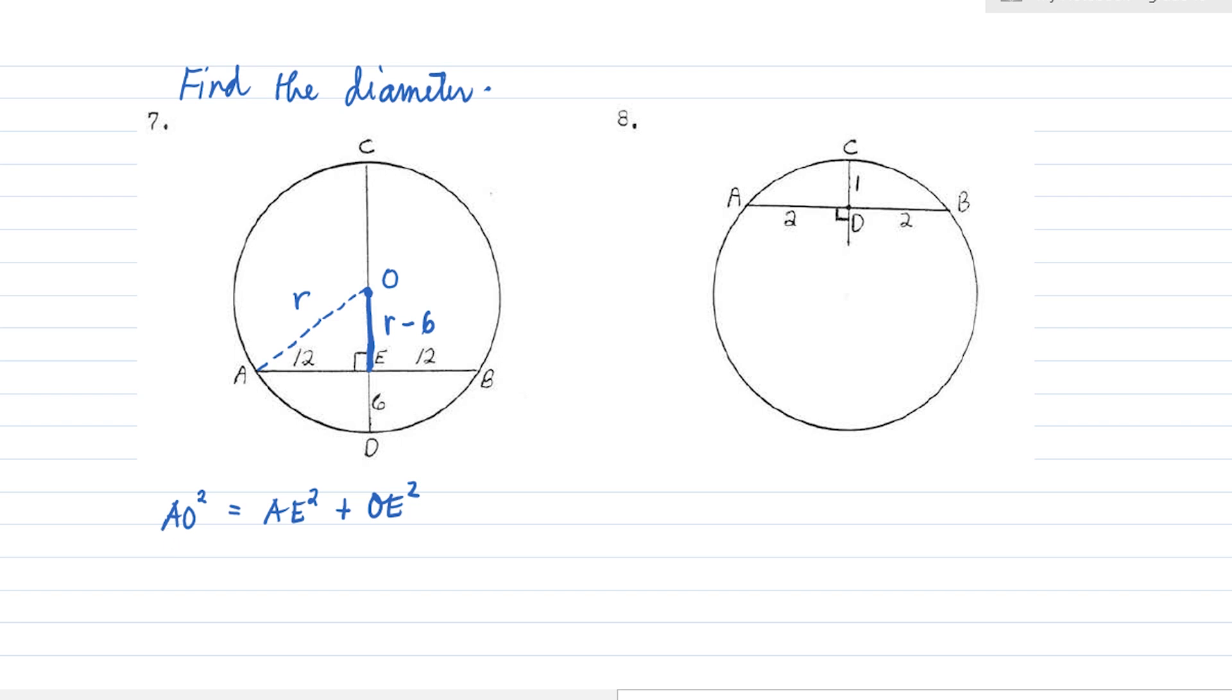Let's substitute. AO is R, that's R squared. AE is 12. And OE is R minus 6. Let's simplify. We have R squared equals 144 plus R minus 6 squared. That's R squared minus 12R plus 36.